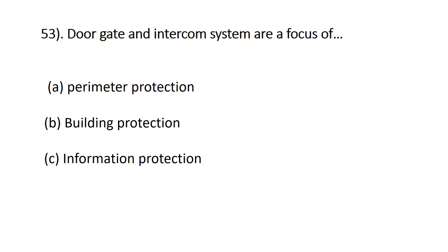Question fifty-three: door, gate, and intercom system are a form of — A) perimeter protection, B) building protection, C) information protection. The correct answer is B, building protection, because we use the intercom system to verify authorized persons and use gates to prevent unauthorized persons from entering the building.